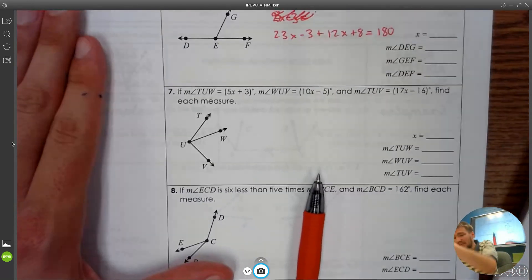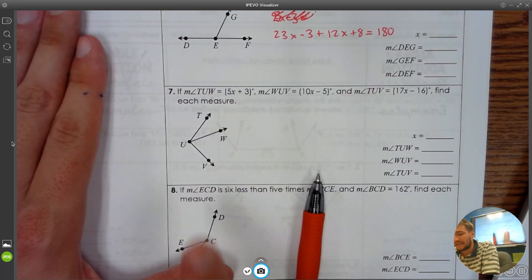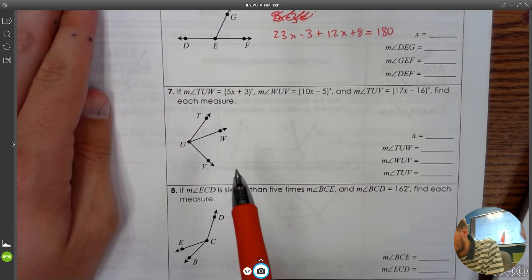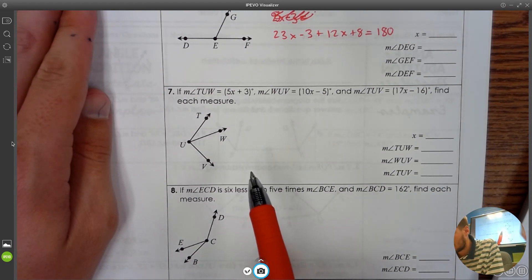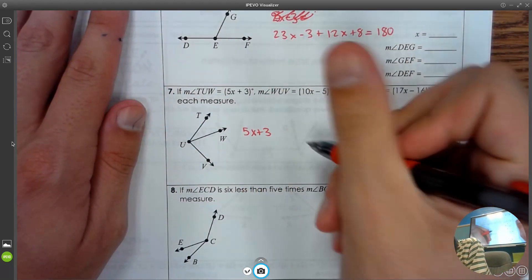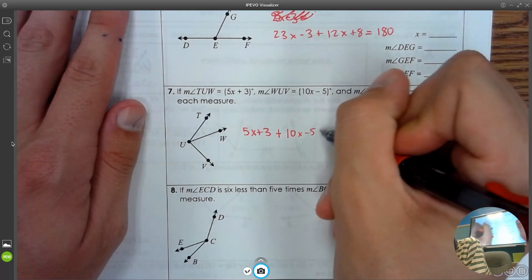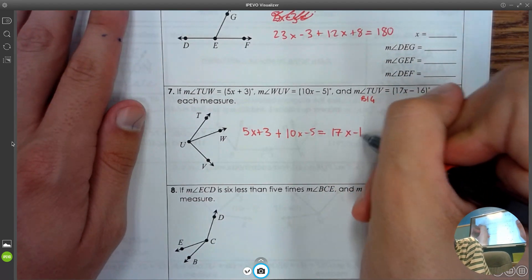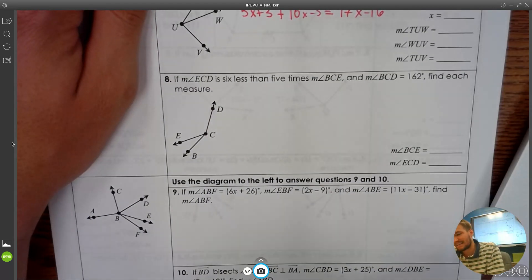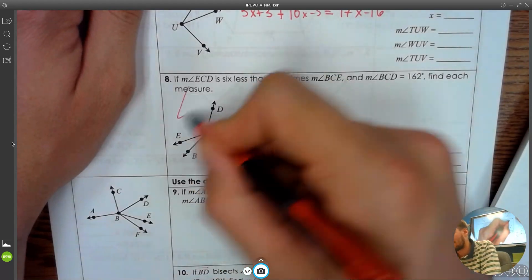Question 7 tells us what TUW, WUV, and TUV is. They're all algebraic expressions. They're all binomials. That's not stressing us out with Desmos. We're just going to write them all out. Which one of these is the big angle? TUV. This is the big one here. So that's the one that needs to be on the equal sign. 5x plus 3 added with 10x minus 5 equals 17x minus 16.